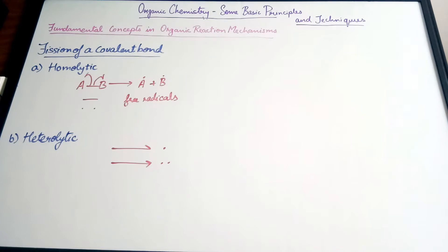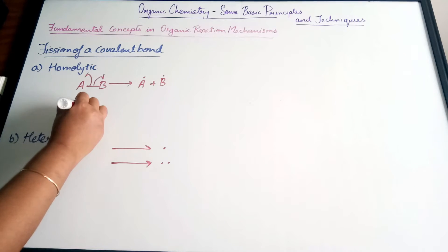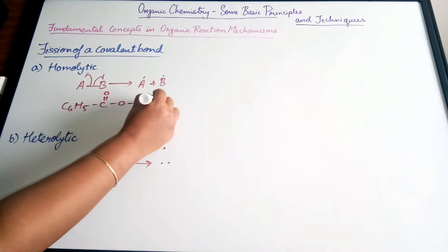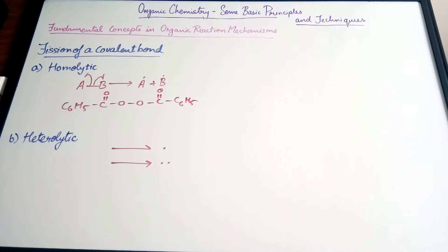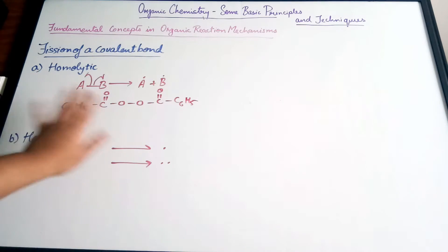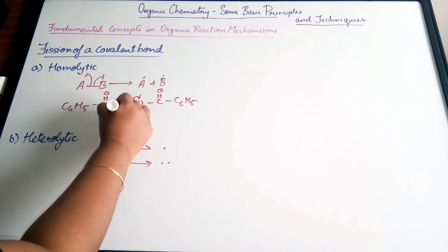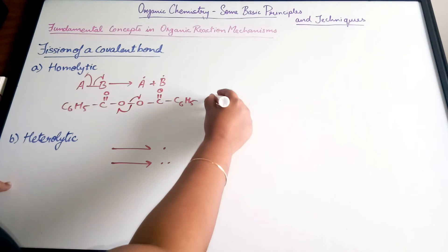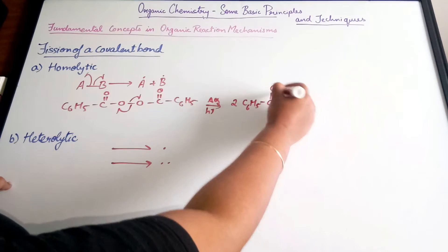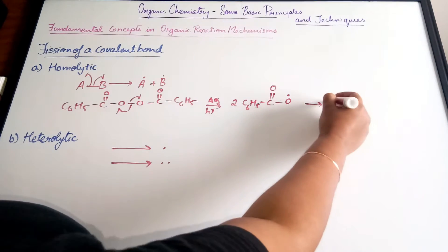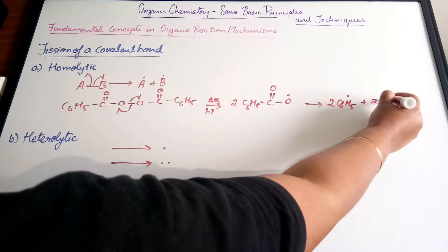Another example of homolytic fission is C₆H₅COO–OOC–C₆H₅ (benzoyl peroxide). The two oxygen atoms have the same chemical nature due to the atoms surrounding them, so they have equal electronegativity and each gets one electron. In the presence of heat or light, this leads to the formation of two C₆H₅COO• radicals, which further break down into 2 C₆H₅• radicals plus 2 CO₂.